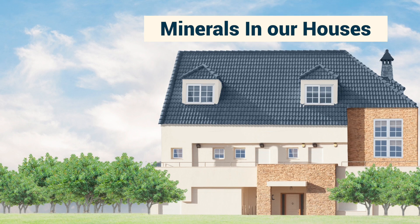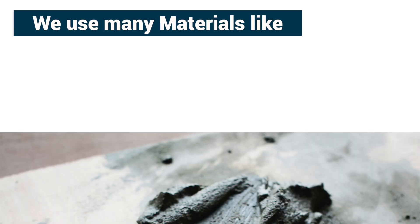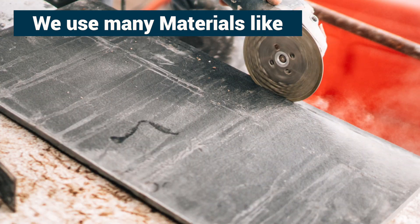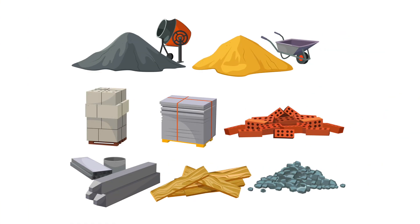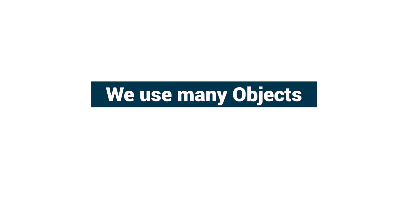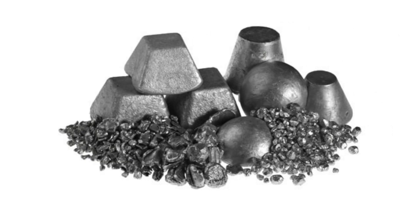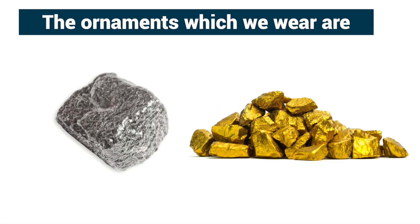We use many materials like cement, sand, lime, karappa stones or granites for the construction of our houses. All of these are made up of various types of minerals. We use many objects made of metals like iron, copper, lead, chrome, aluminium etc. The ornaments which we wear are of silver and gold minerals.